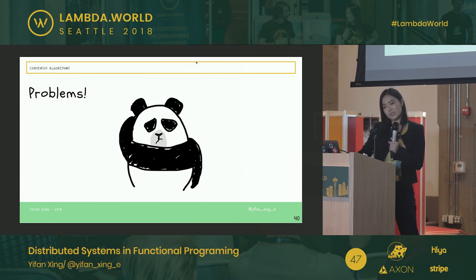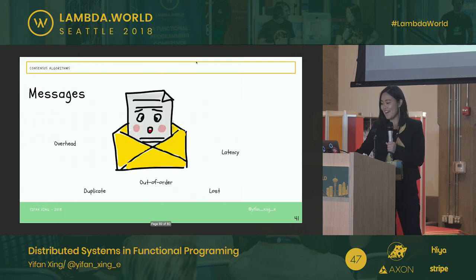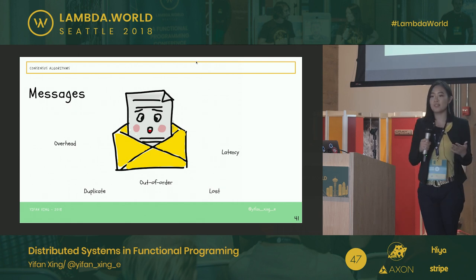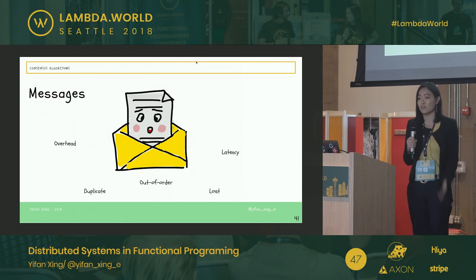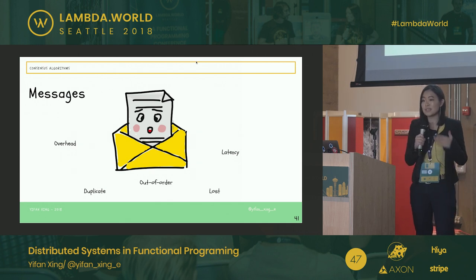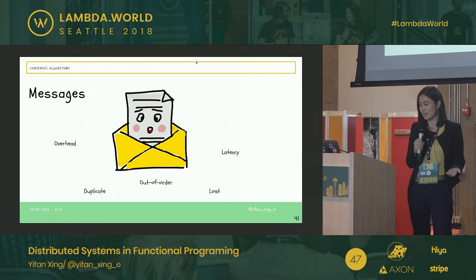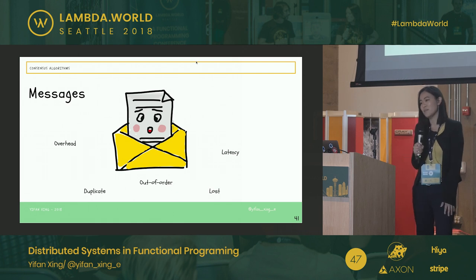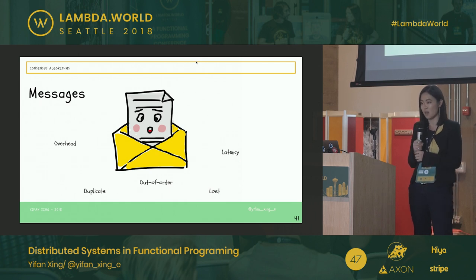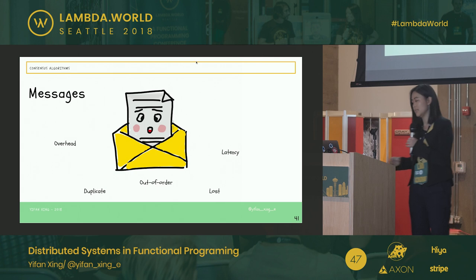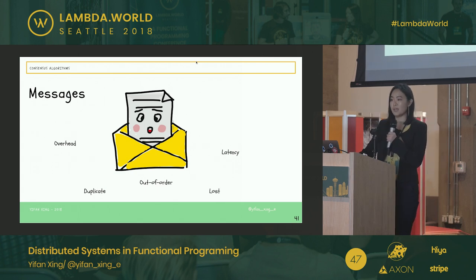Are there any problems with consensus algorithms? There are problems with everything. In distributed systems, we communicate by sending messages, creating a huge amount of overhead because we constantly send messages and usually take several rounds before achieving consensus. We need to deal with overhead, recognize duplicate messages, handle out-of-order messages, take care of lost messages, and deal with network latencies. These are all things we must consider when implementing consensus algorithms.